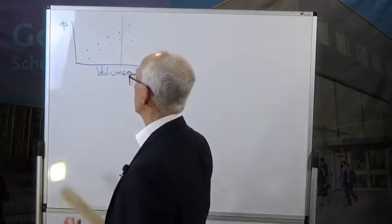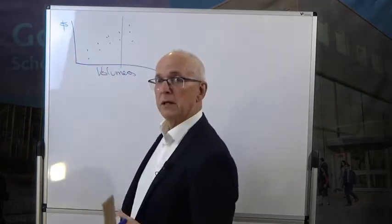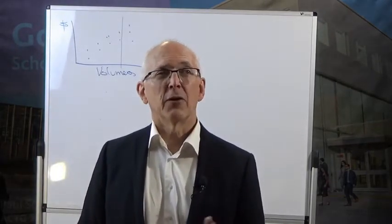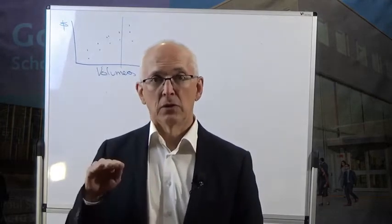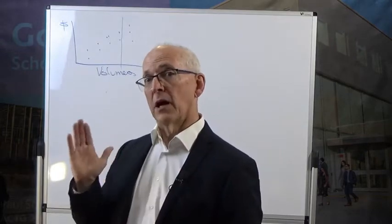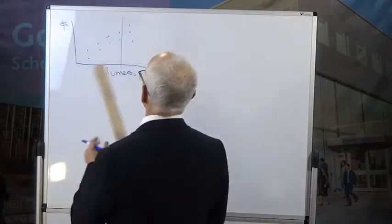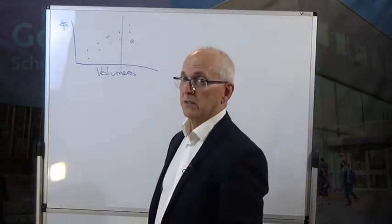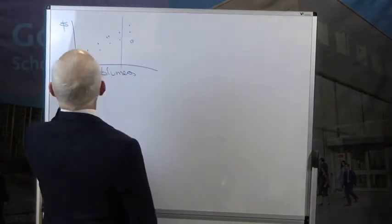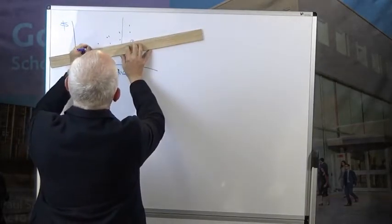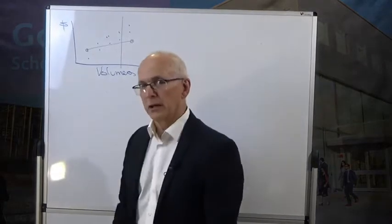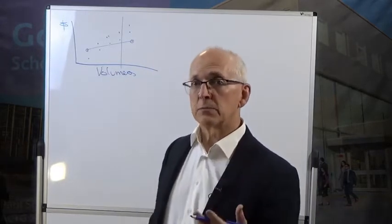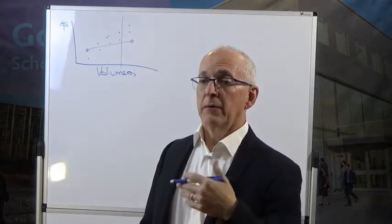The high-low method starts with the high volume and low volume — not high cost and low cost, which is a common mistake students make. We're looking for the high production volume and the low production volume. The high production volume is one point on the chart; the low production volume is another. The high-low method will give us our prediction line as a starting point.